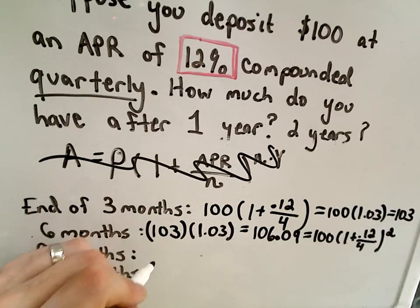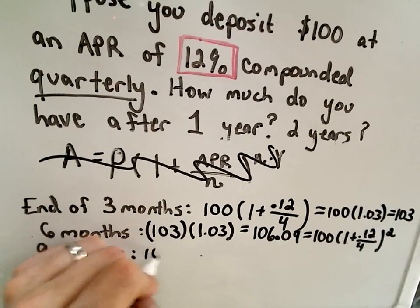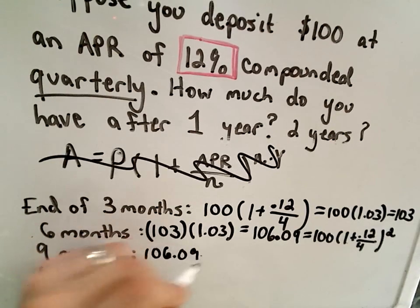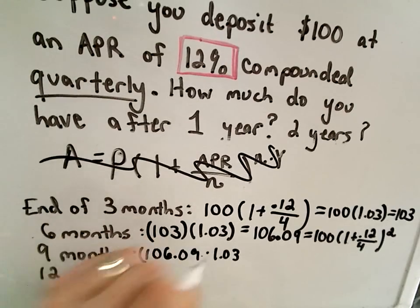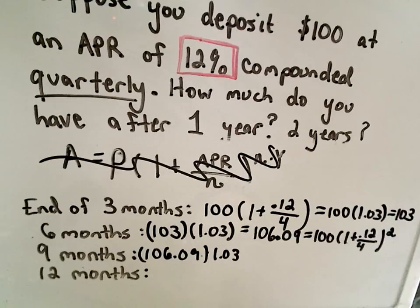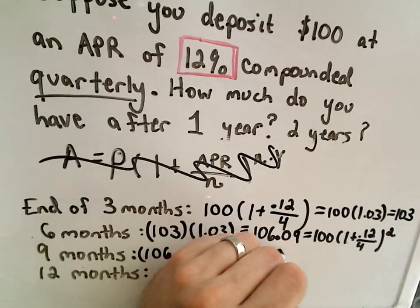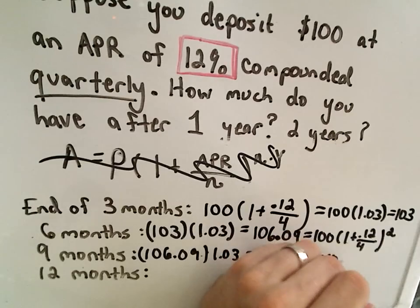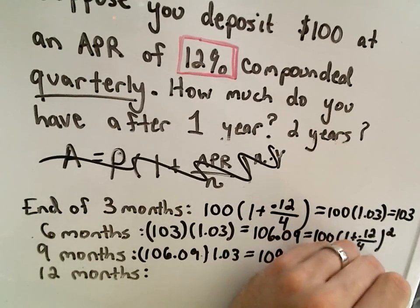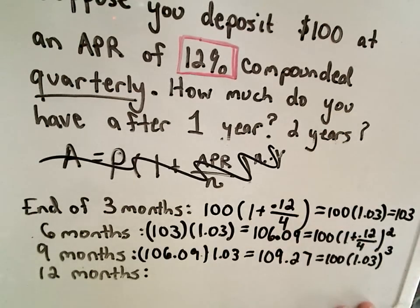At the end of nine months, we're going to have our new amount, our 106.09. Again, just multiply that by 1.03. Let's see what we get here. So this is going to be 109.27. Again, we could write this as 100 times 1.03 raised to the third power.